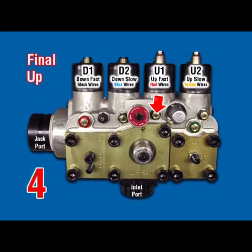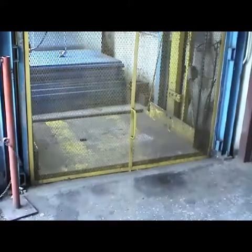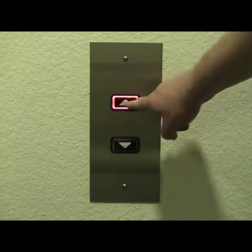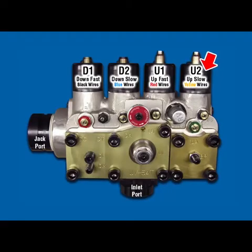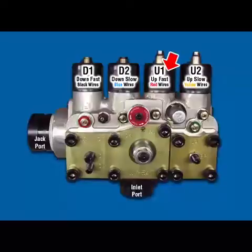UT — Up Transition. The following procedure helps in cutting through the ineffective zone of the up transition adjuster, therefore expediting the final setting of UT. Car at lower floor with no load. Register an up call with U2 energized — car will move up at leveling speed. Turn UT clockwise until car speeds up, then slowly counterclockwise until car slows down again.